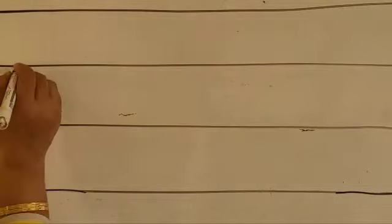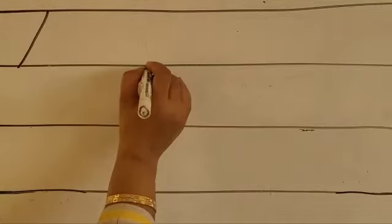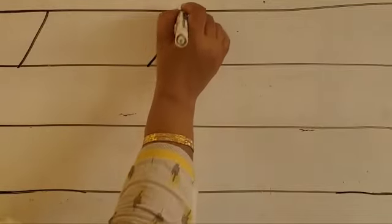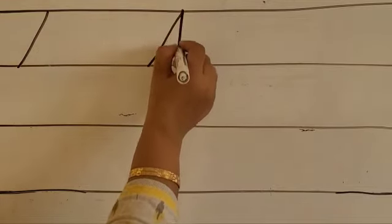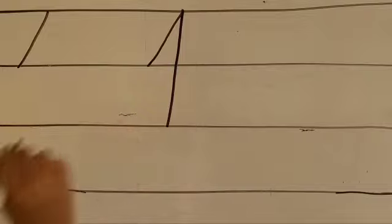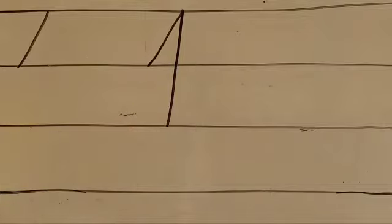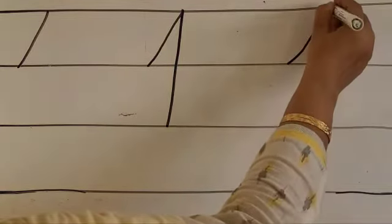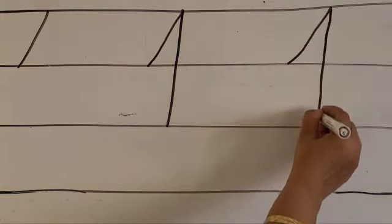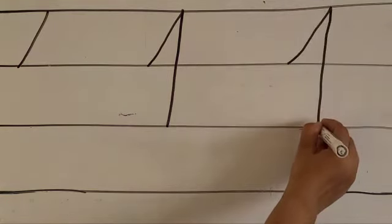Next letter is letter H. H letter starts from the second line — make a small slant line like this. Again same procedure: start from the second line, go up till the third line, then stop.